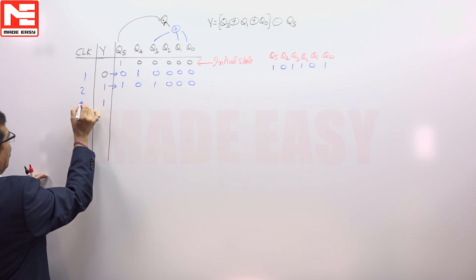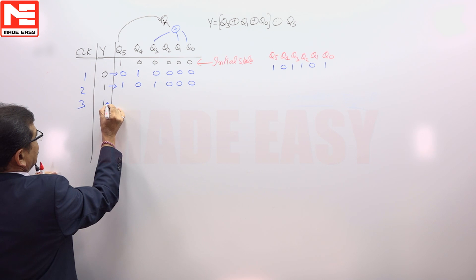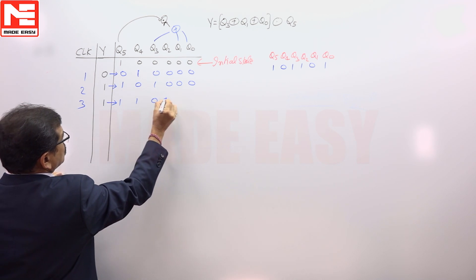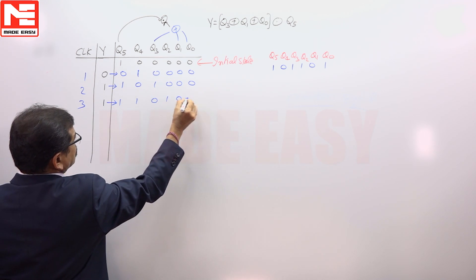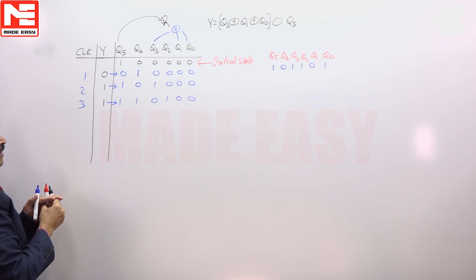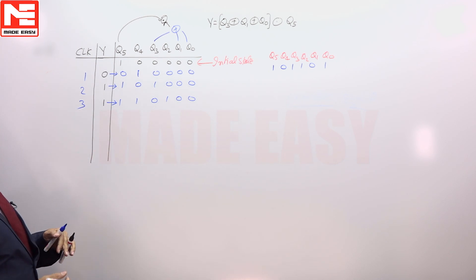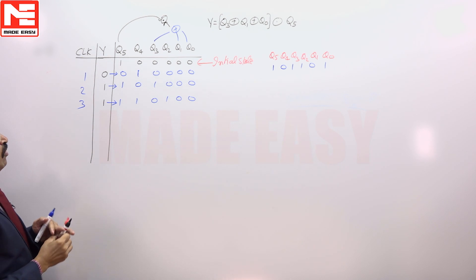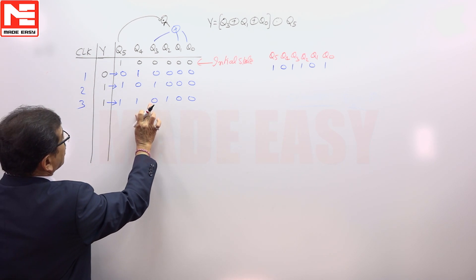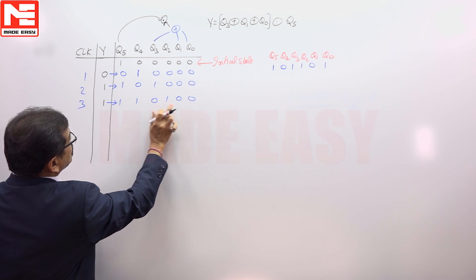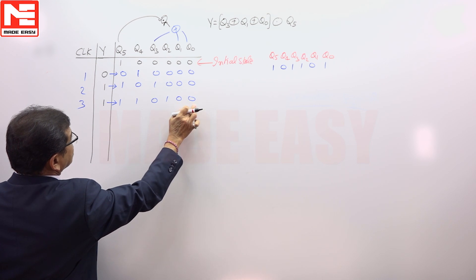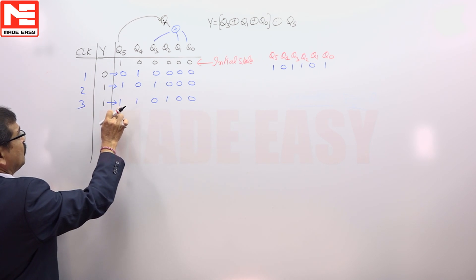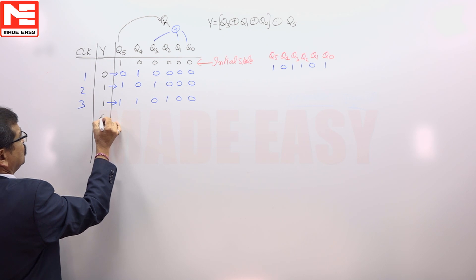Now if we apply the clock signal, the register content becomes 1 1 0 1 0 0. It has not reached the required state, so we continue with further clock pulses. Looking at exclusive OR between Q3, Q1, Q0 gives 0, and 0 exclusive NOR with Q5=1 is 0.